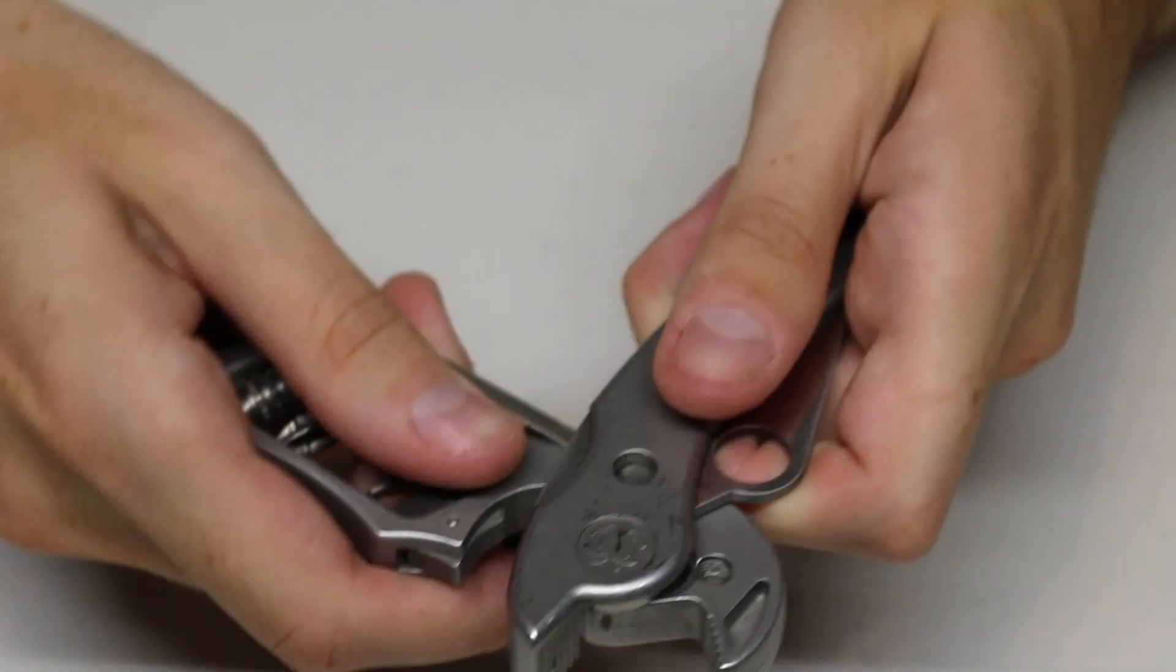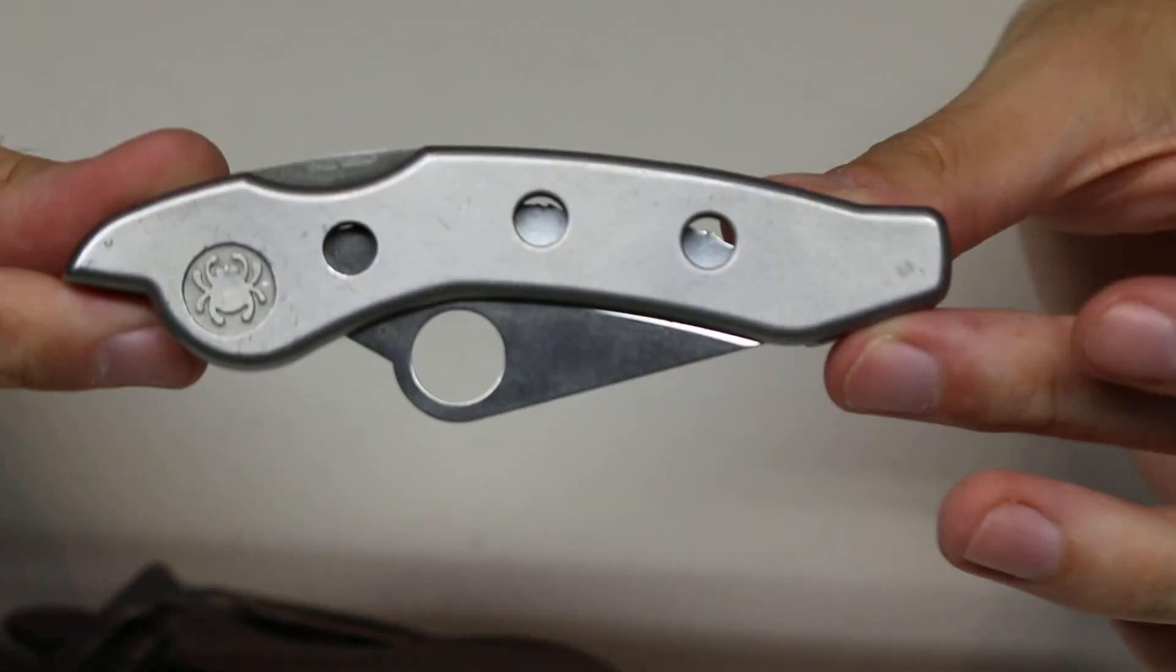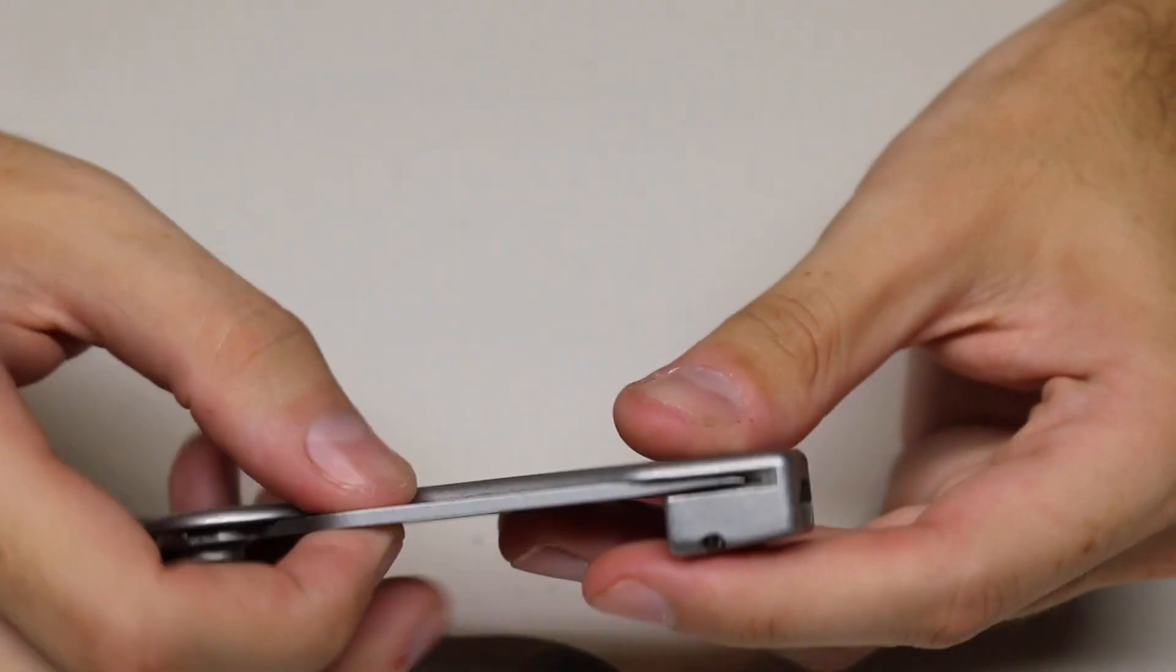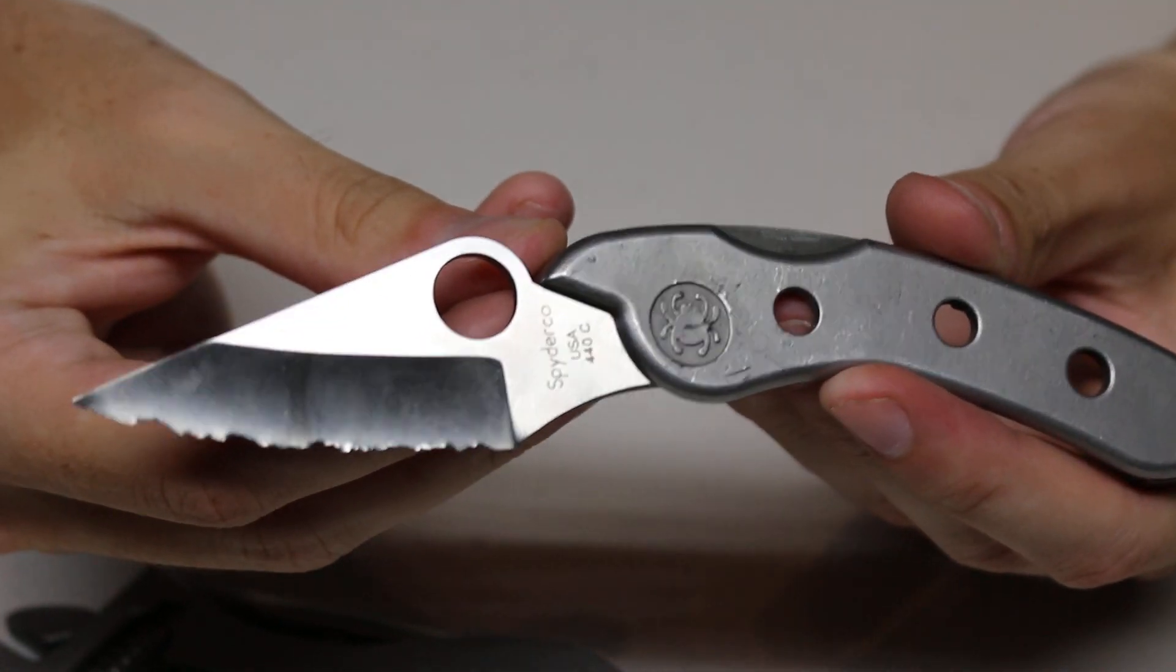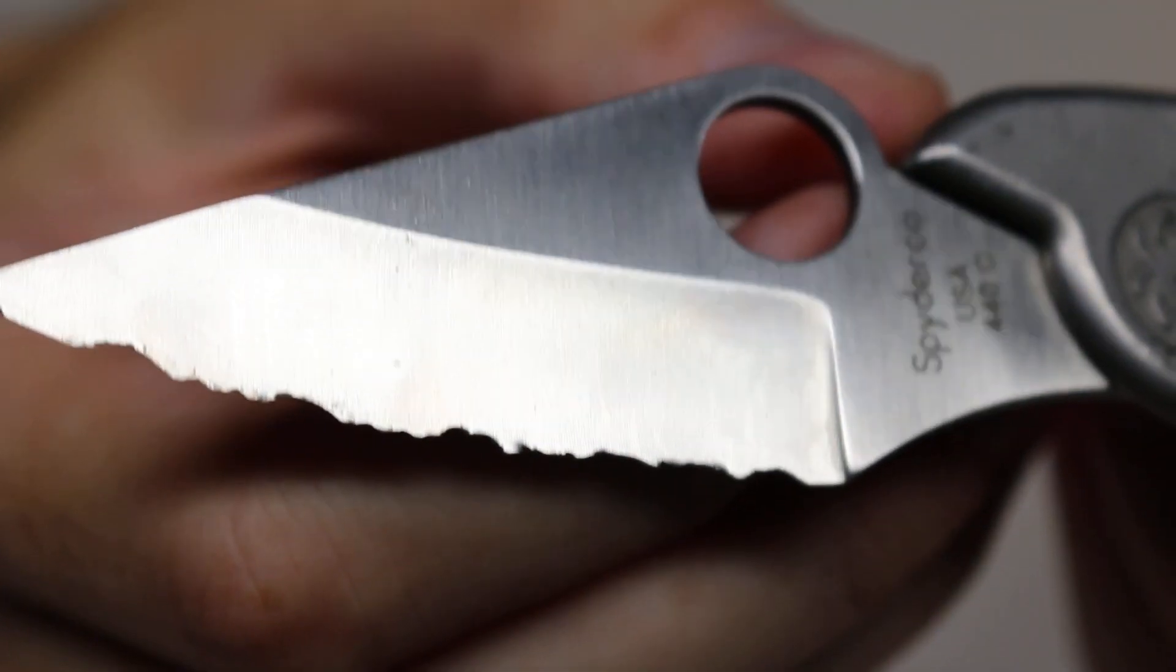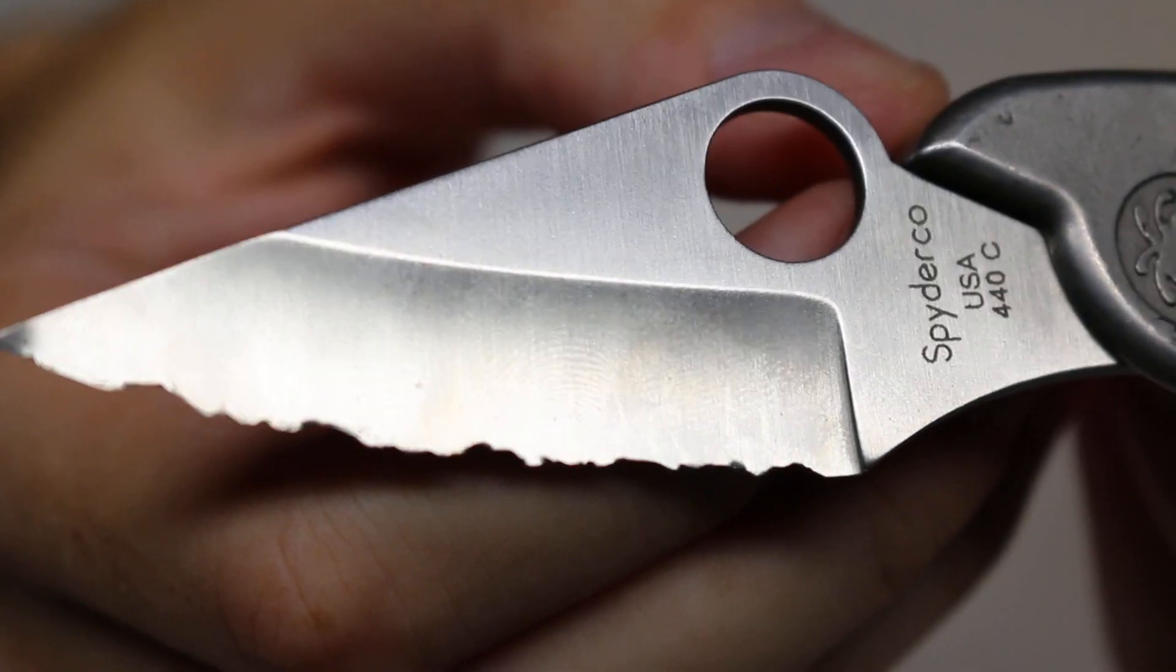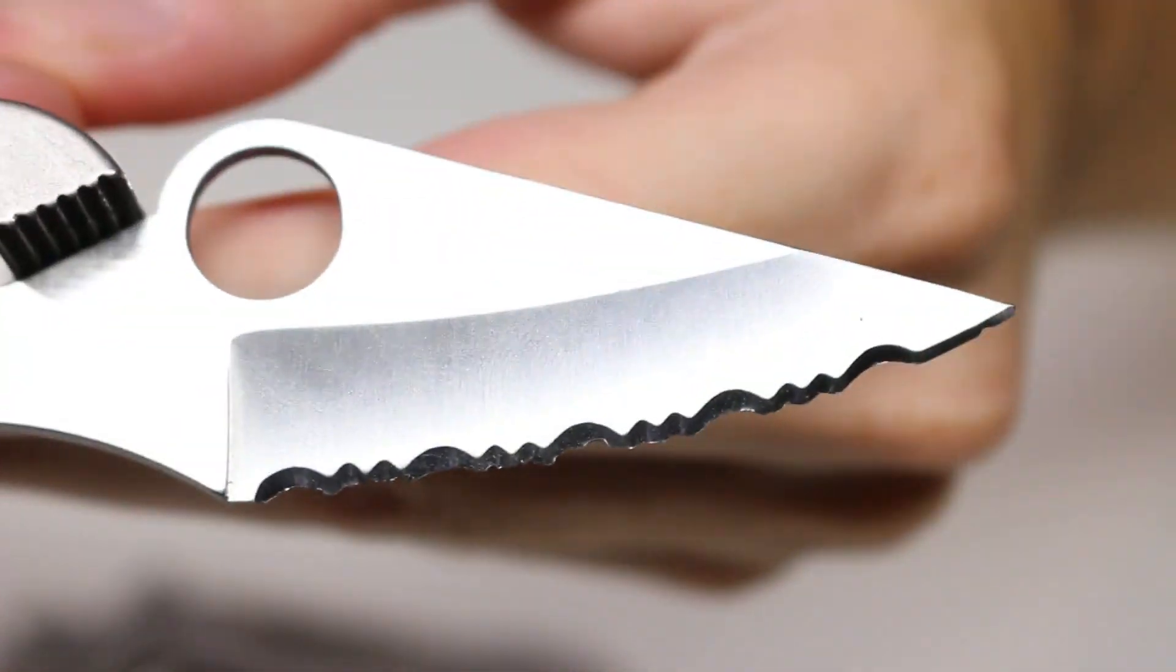It can sometimes be tricky to do that while on camera. Open that up. You can see just how poorly or poor the serrations are right now. This knife was just abused, or at least the serrations were.